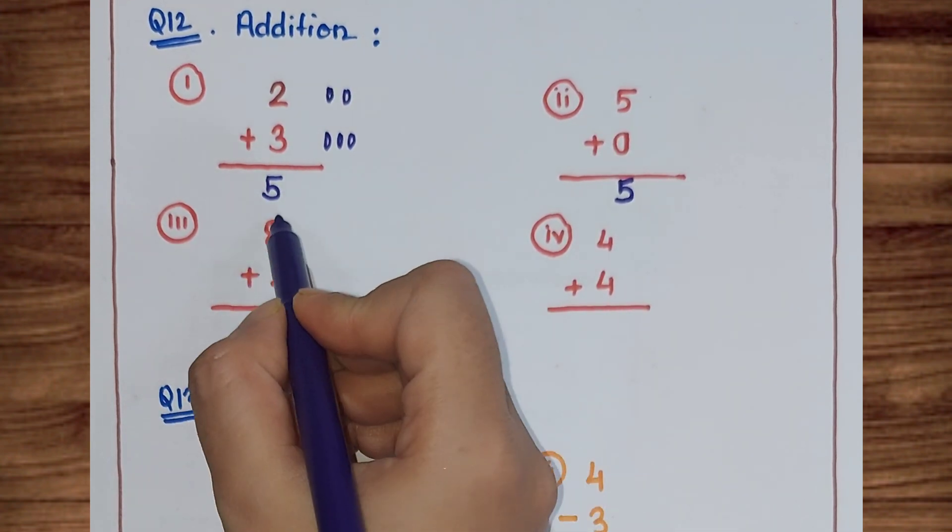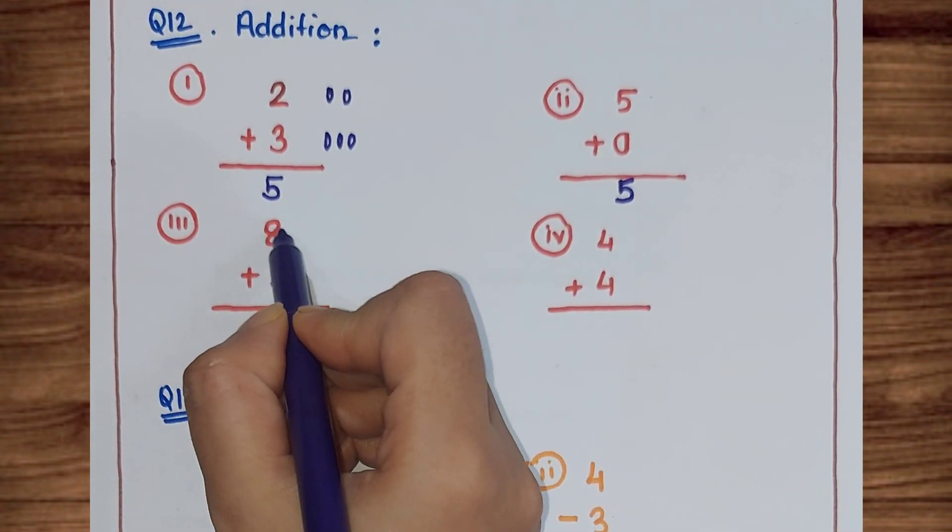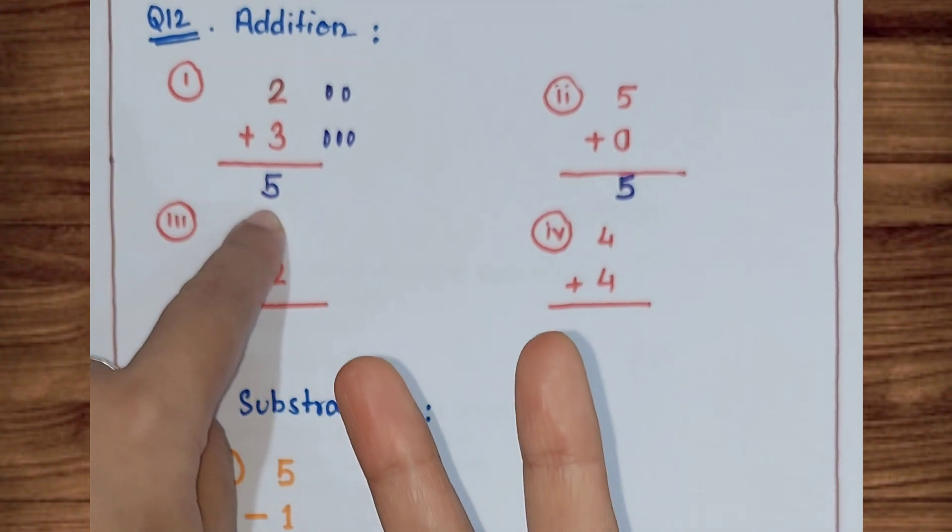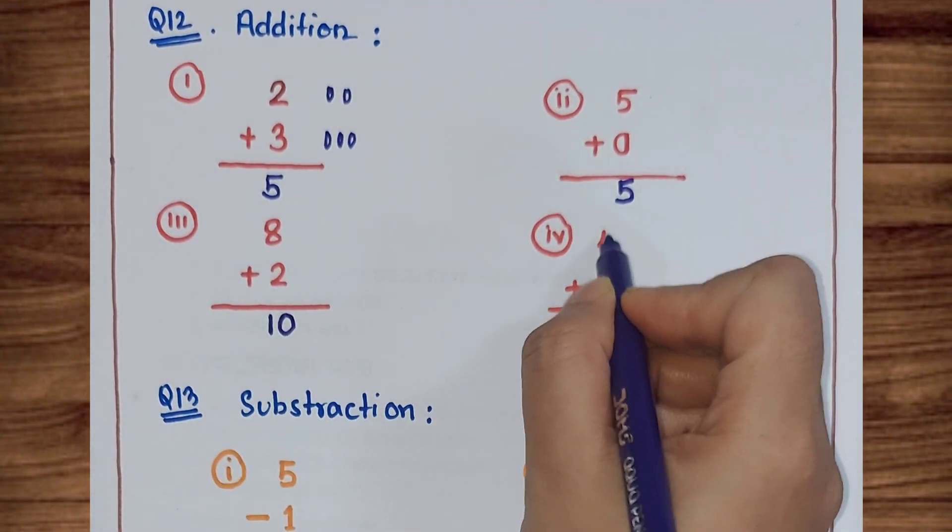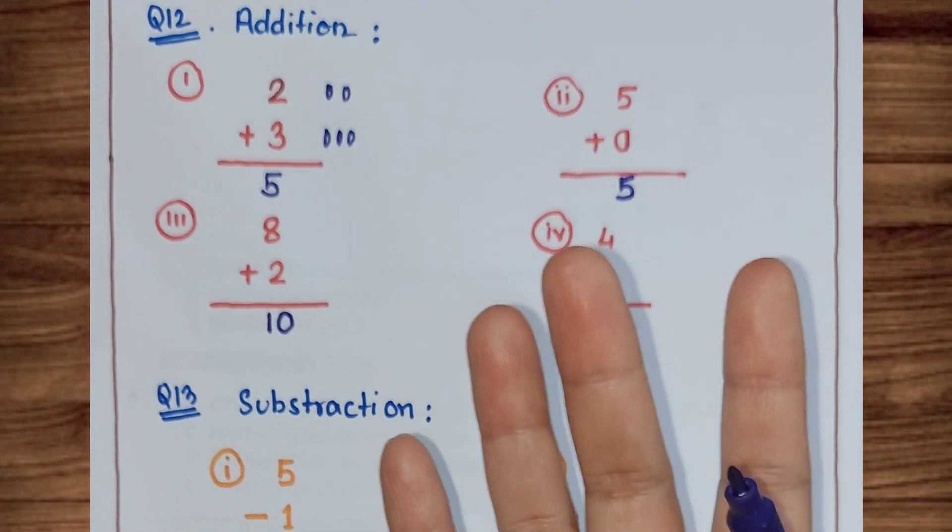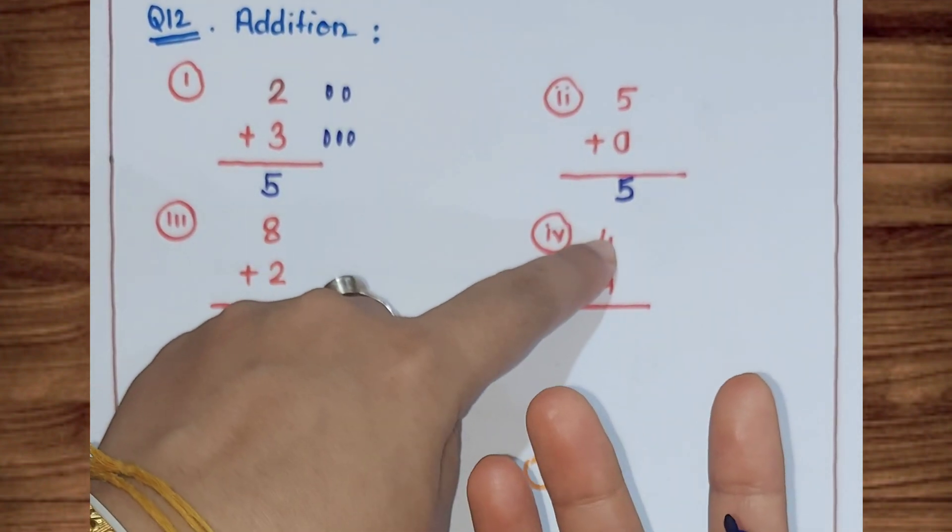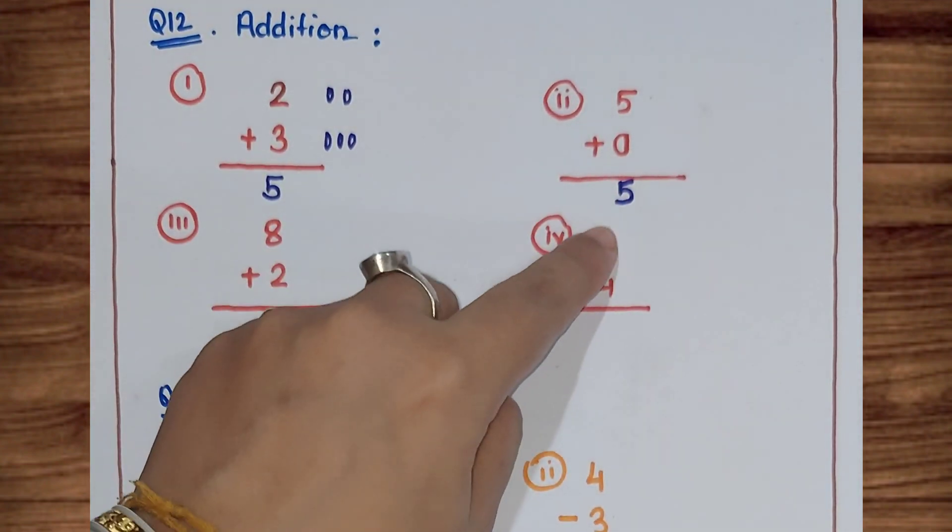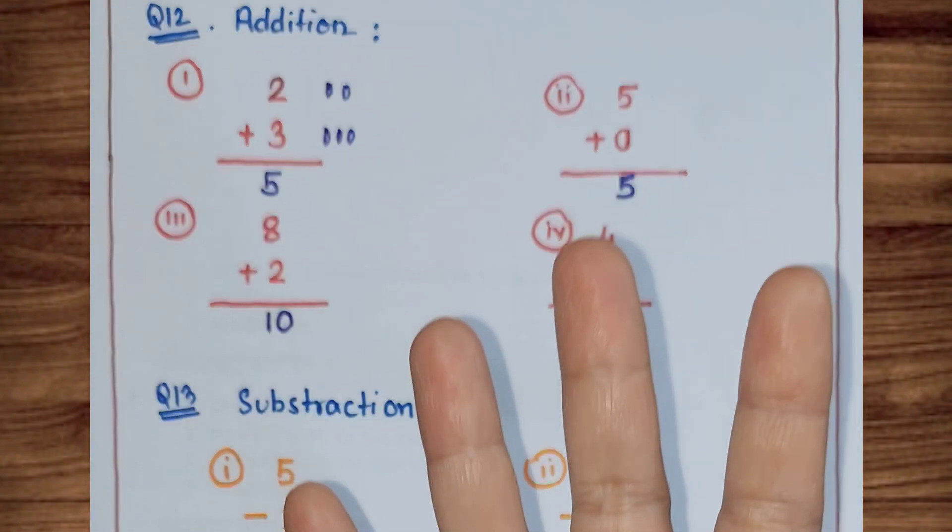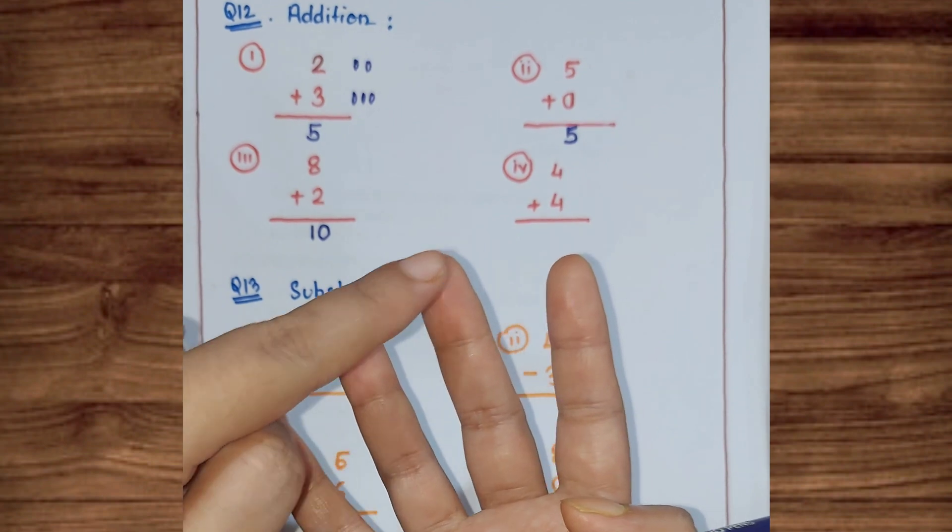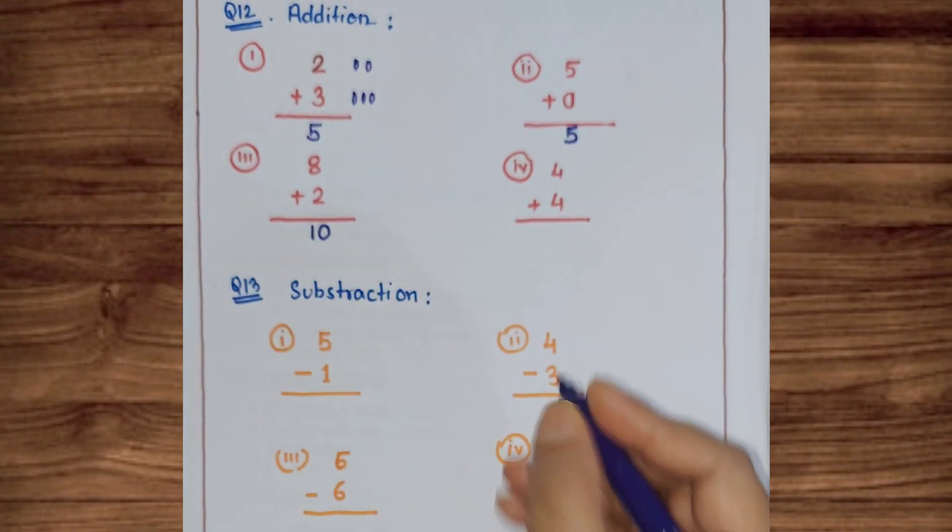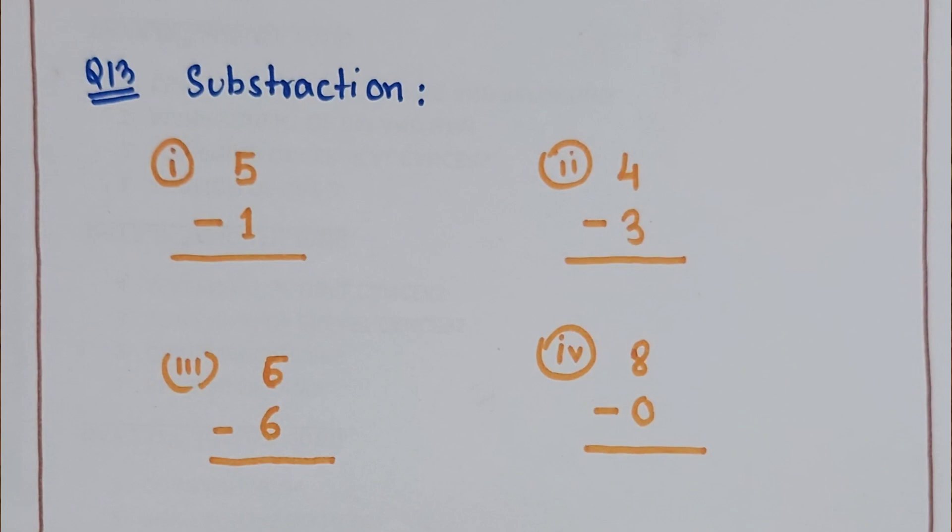And another method: eight in my mind and two fingers up. What number comes after eight? Nine and ten. Four plus four equals how much? Four in my mind and four fingers up. After four comes five, six, seven, eight.